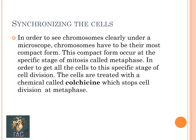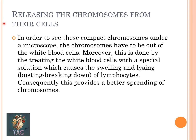The next step is releasing the chromosomes from the cells. To see compact chromosomes under the microscope, chromosomes must be outside the white blood cells. This is done by treating the WBCs with a special solution that causes swelling and lysis of the lymphocytes, which provides better spreading of the chromosomes.